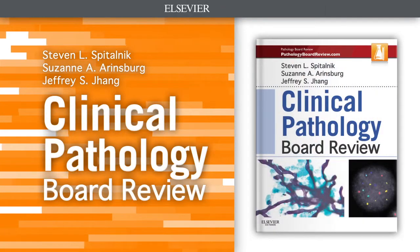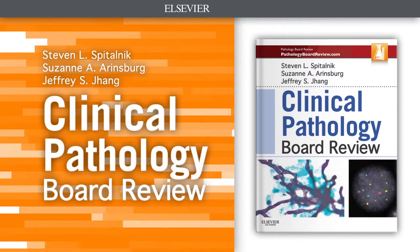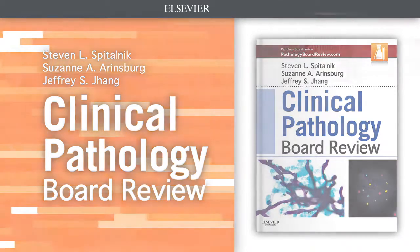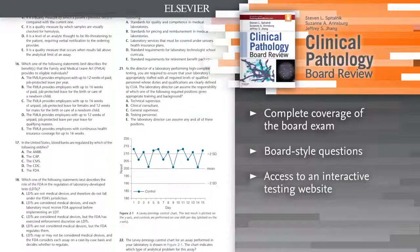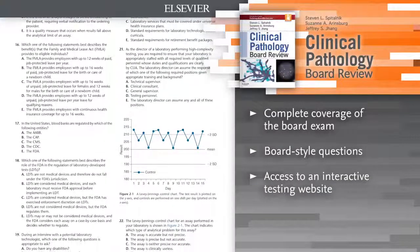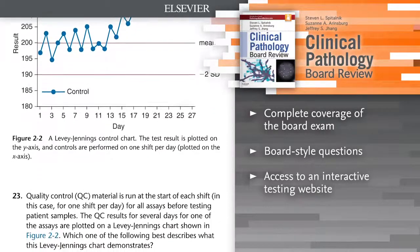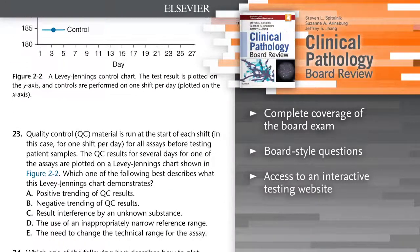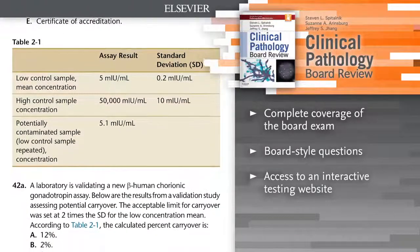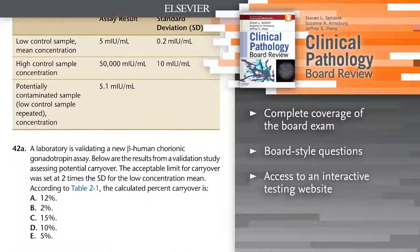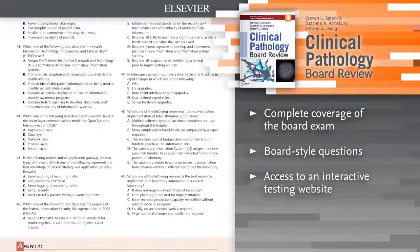Introducing Clinical Pathology Board Review. This essential study guide for certification or recertification gives you access to coverage of all the major subject areas of clinical pathology. Designed as a companion to Anatomic Pathology Board Review Second Edition, this new book is a welcome resource for pathology residents and practicing pathologists alike.